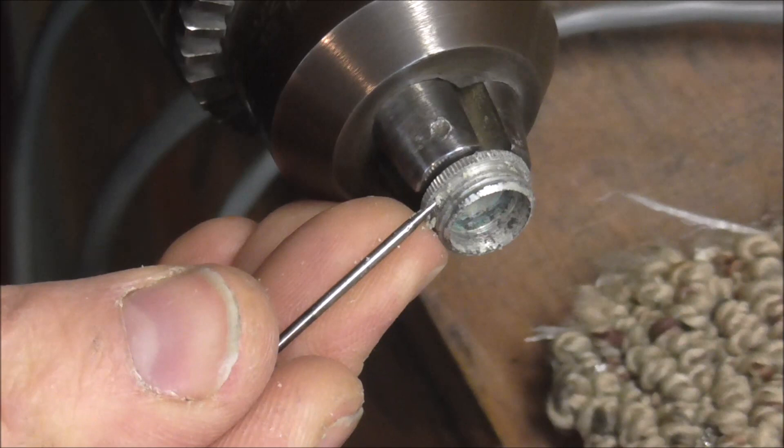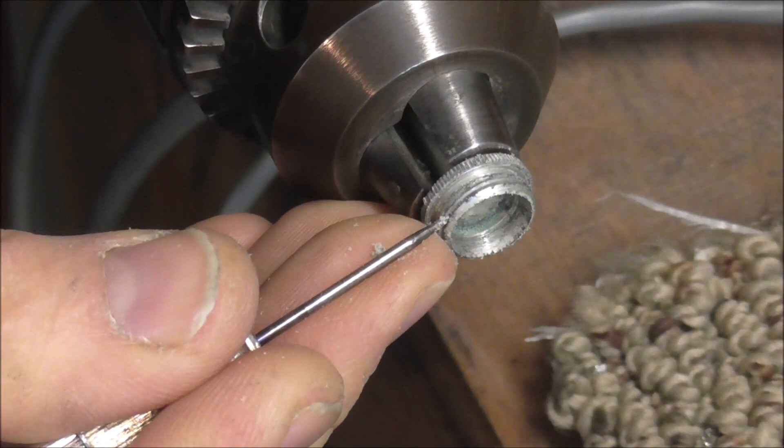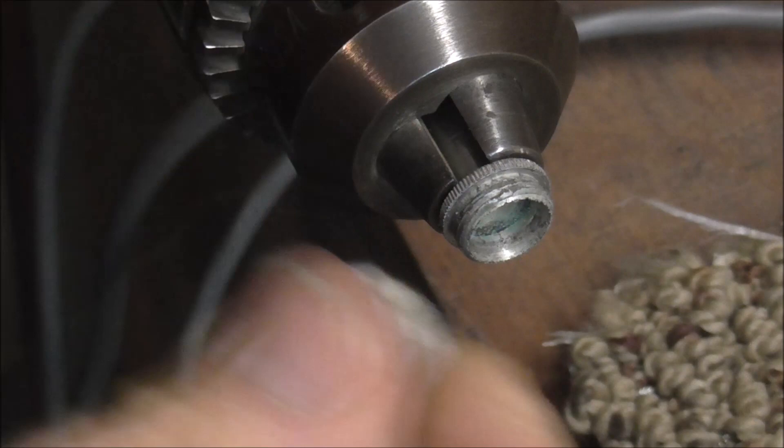You can also use a poker to do this job too. Clean that up until the corrosion is gone, and also clean in the threadings. And then finally clean it up with a cloth.